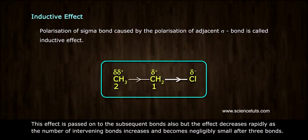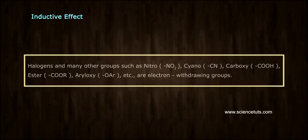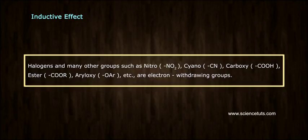This effect is passed on to the subsequent bonds also, but the effect decreases rapidly as the number of intervening bonds increases and becomes negligibly small after three bonds. Halogens and many other groups such as nitro NO2, cyano CN, carboxy COOH, ester COOR, aryloxy OAR, etc., are electron-withdrawing groups.